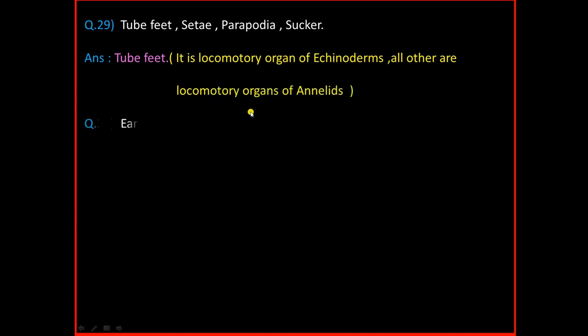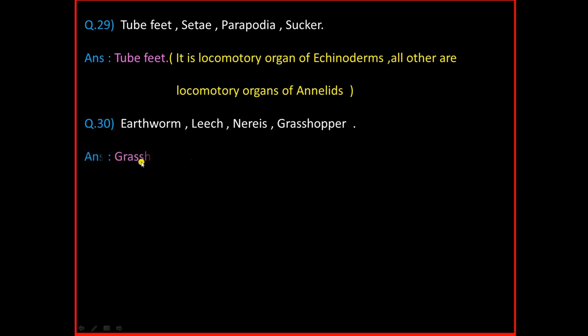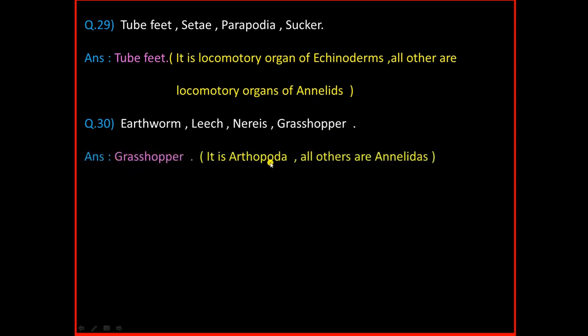Question Number 30: Earthworm, Leech, Nereis, Grasshopper. And the answer is Grasshopper. Grasshopper is an Arthropoda and all others are Annelids.